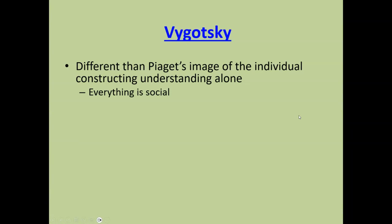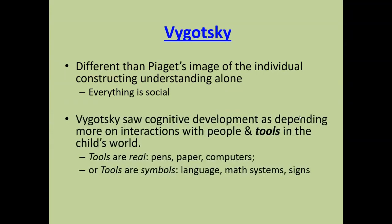So, Vygotsky — he's a Russian theorist who died in 1936 from tuberculosis in Moscow. He was in Stalin's education department and had a very different view from Piaget. Piaget believes individuals do things on their own — they're little scientists, they find stuff out themselves. Vygotsky says on your own you'll find out nothing; you need to be in a social group, and within that social group you need to be interacting with other people or with tools.